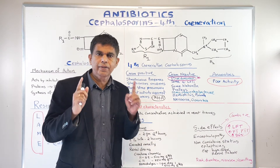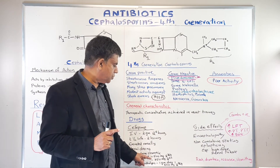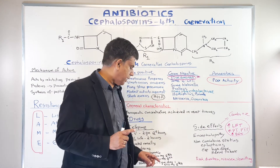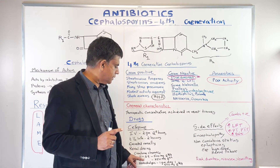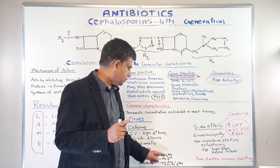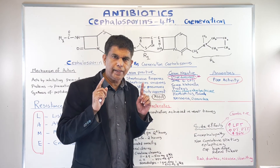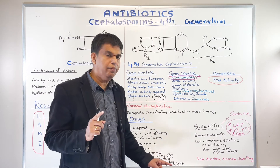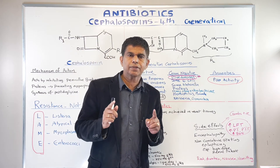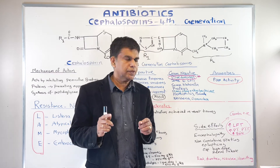If creatinine clearance is between 11 and 29, you give 500 mg every 24 hours. If it is less than 11, you give 250 mg every 24 hours. For hemodialysis, on day one you give 1 gram, and on other days you start with 500 mg every 24 hours.